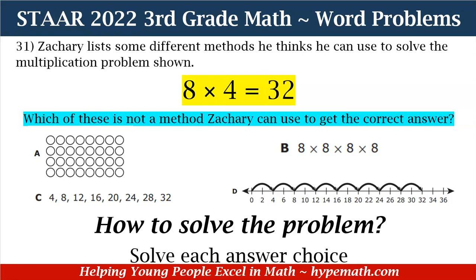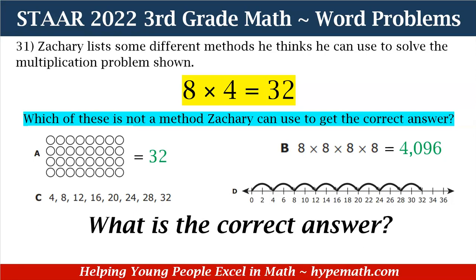The information that can help us is that eight times four is equal to 32. What we need to do for A and B is figure out what our total is. For A, we said we have eight columns and in each column there are four balls, so eight times four equals 32. For B, eight times eight times eight times eight equals 4,096. For C, we have the multiples of four all the way up to 32. And for D, we have hops every fourth number all the way up to 32.